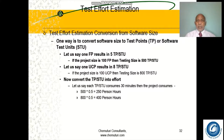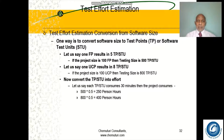One way is to convert software size to test points or software test units. We can define a relation between testing size and project size, derive a conversion factor using internal data, and then convert the software size into testing project size. For example, one function point results in five test points; if the project is 100 function points, the testing size is 500 test points. Or one use case point equals eight test points — 100 use case points gives 800 test points. Then convert test points to effort: if each test point consumes 30 minutes, the effort is 500 × 0.5 = 250 person hours, or 800 × 0.5 = 400 person hours.